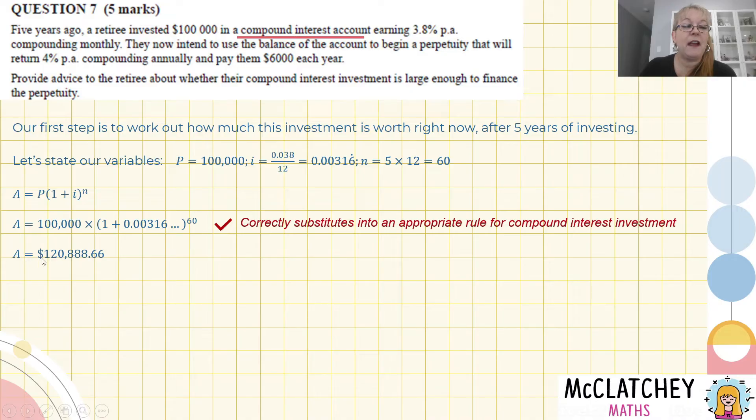We work out now that our investment is now worth today $120,888.66. So this is what we're going to use to set up the perpetuity. So we've worked out that balance. We've got a second mark.